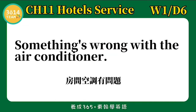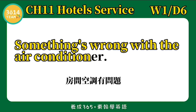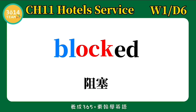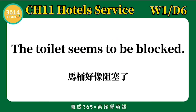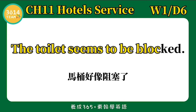Something's wrong with the air conditioner. 房间空调有问题。跟着我念一次：Something's wrong with the air conditioner. Blocked 阻塞。BL 我们念，OCK 念 ARK，ED 放在 K 的后面，我们会发 T 的音：BLOCKED. The toilet seems to be blocked. 马桶好像阻塞了。跟着我念一次：The toilet seems to be blocked.